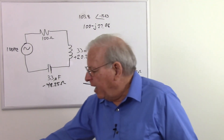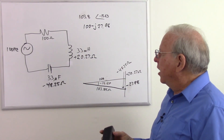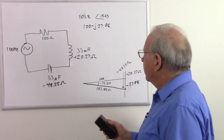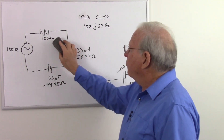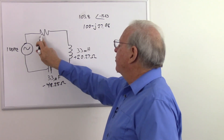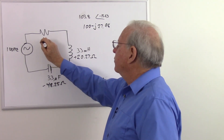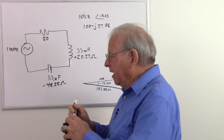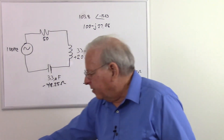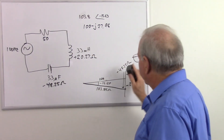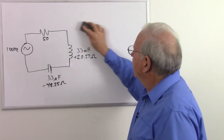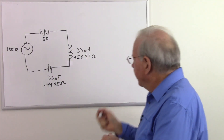Let's go ahead and make a change. Last time we only changed the frequency; now let's change the resistance. Let's make the resistance 50 ohms. This is easy because we don't have to recalculate the reactances — we just have to recalculate the impedance.